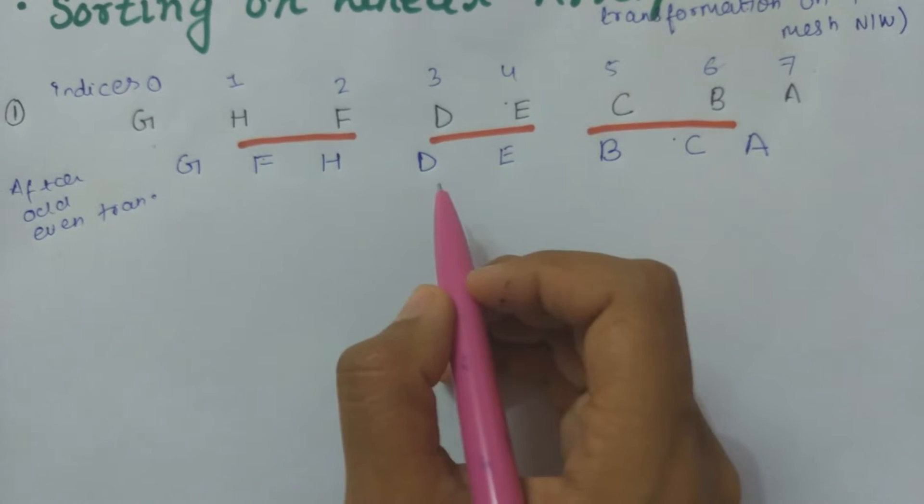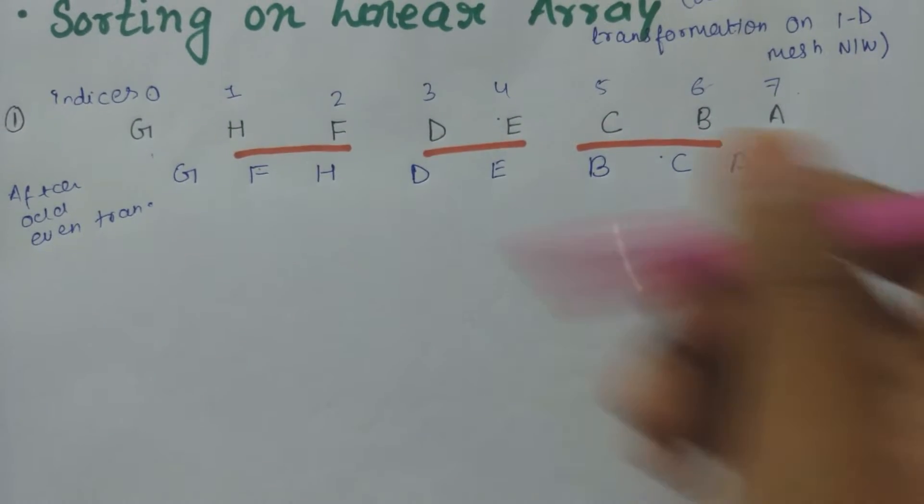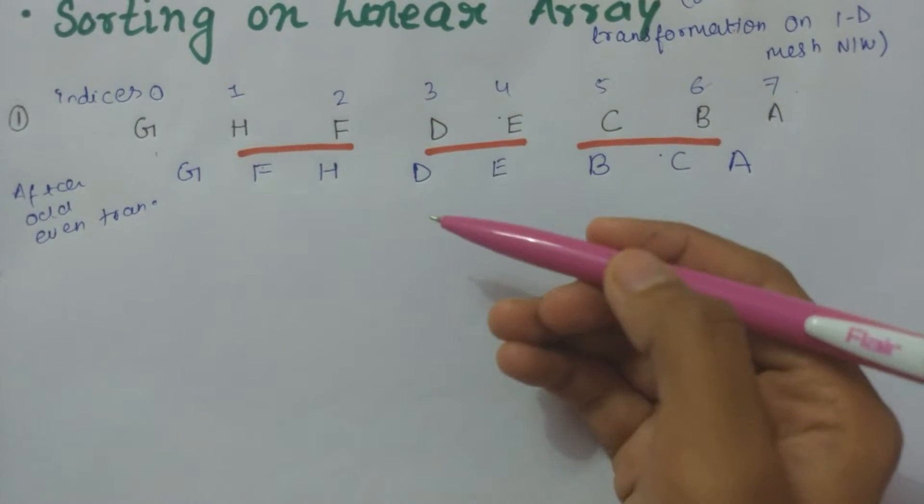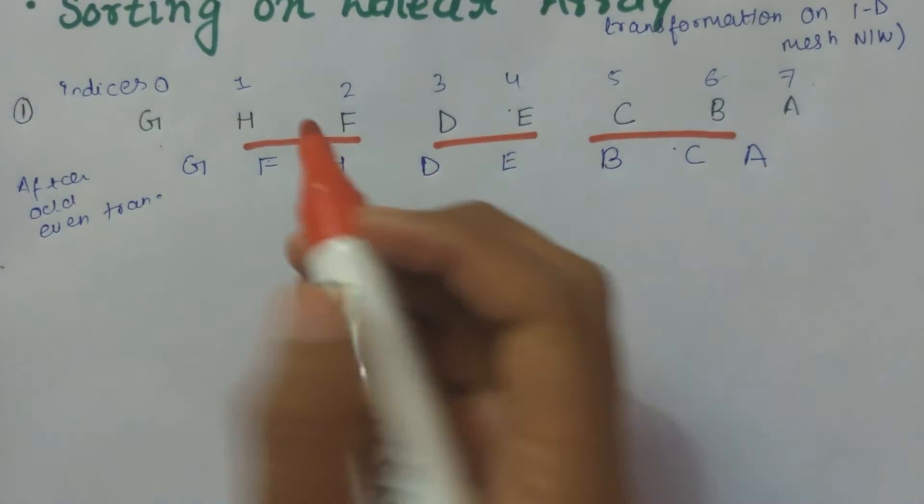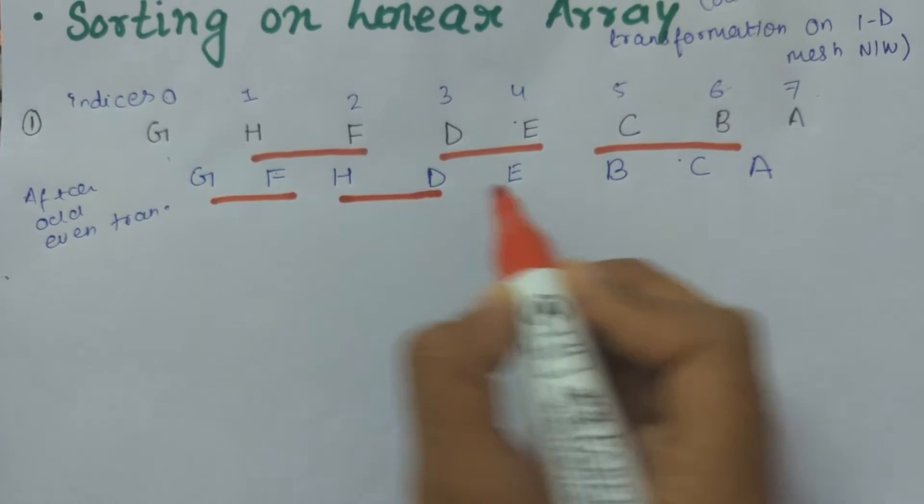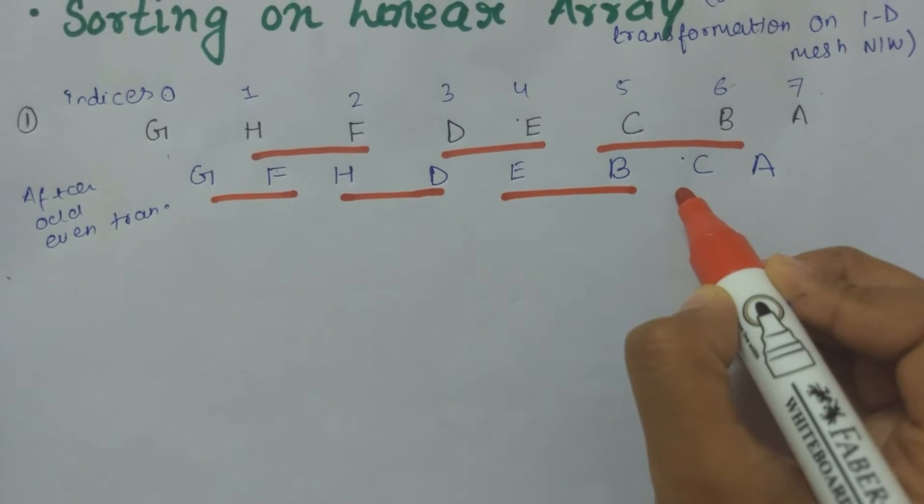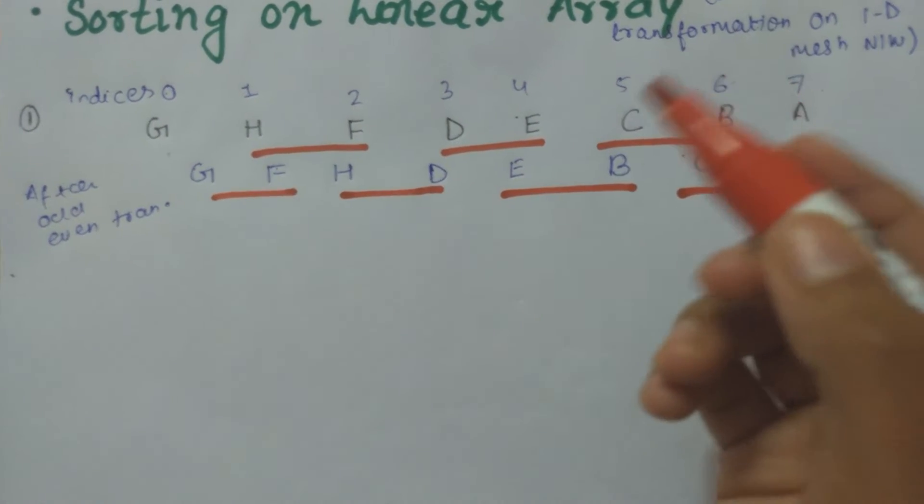We will repeat the process by continuing the odd-even transformation. The next pair will be G-F, H-D, E-B, C-A, and we will continue.